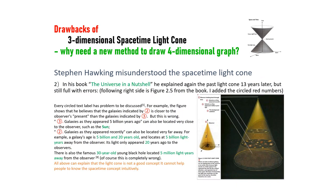Second, in his book The Universe in a Nutshell, he explained again the past light cone 13 years later, but still full with errors. The following right side is figure 2.5 from the book. I edited the circled red cone numbers. Every circled text label has a problem to be discussed. Refer to my book. For example, the figure shows that he believes that the galaxies indicated by 2 is closer to the observers present than the galaxies indicated by 3, but this is wrong. 3 galaxies as they appeared 5 billion years ago can only be located very close to the observer, such as the Sun. 2 galaxies as they appeared recently can also be located very far away.